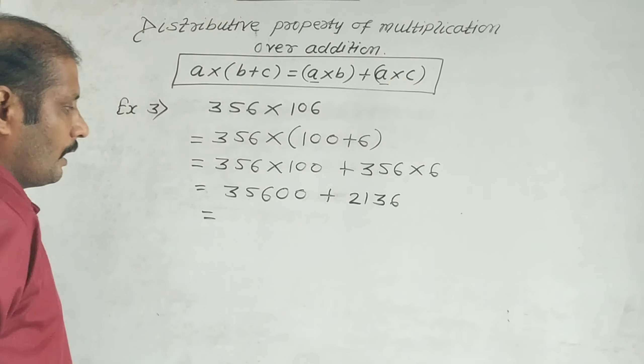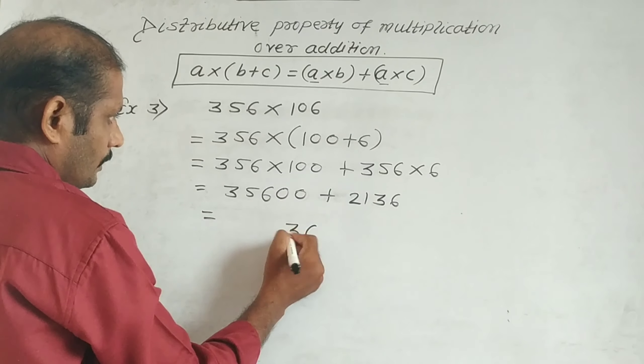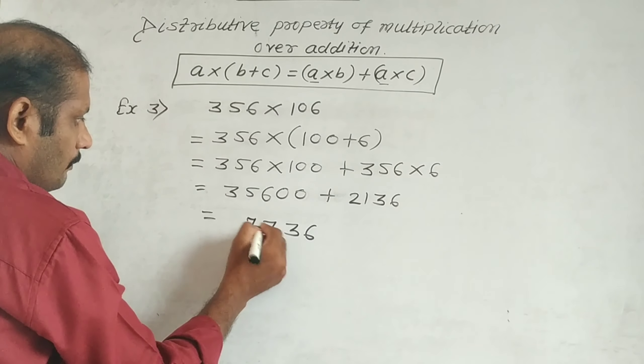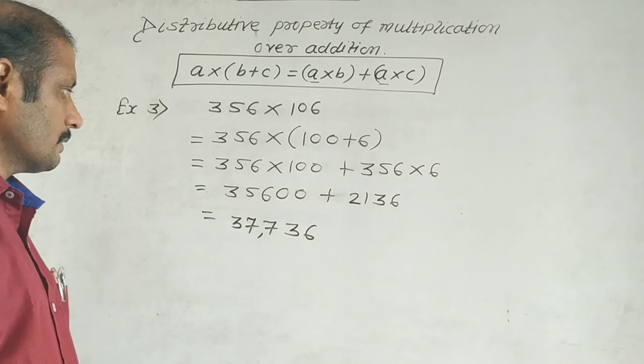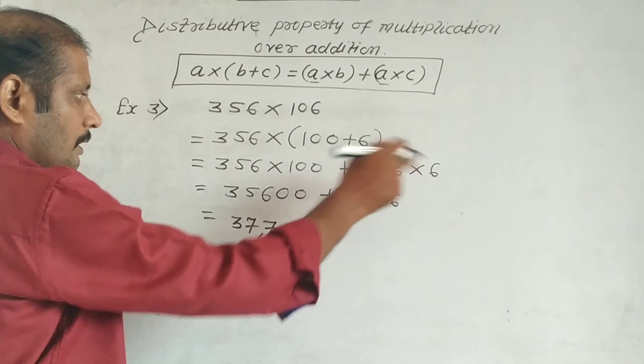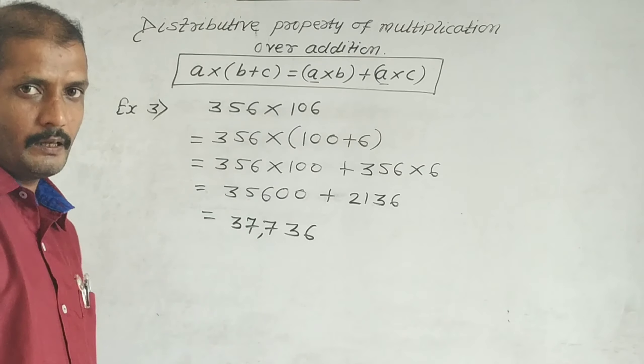Now we'll do the addition: 6 + 0 = 6, 3 + 0 = 3, 1 + 6 = 7, 2 + 5 = 7, and 3 as it is. So we get the answer 37,736. If you check this multiplication the long way, you'll get the same answer. Got it?